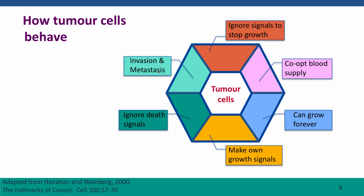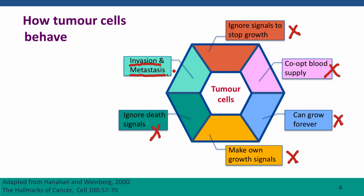Cancer cells, in contrast, do all these things wrong. They ignore signals to stop growing. And very often they even synthesize their own growth signals, so they don't have to pay any attention to signals from other cells. Often they can grow forever. They ignore signals telling them that it's time to die. They send out signals that actually steal the blood supply away from other cells, so the tumor cell gets more than its normal share of oxygen and nutrients. And they wander — depending on the tumor type, they can crawl away into nearby tissues (that's invasion), or they can break loose and start to grow in totally new locations. That's called metastasis.